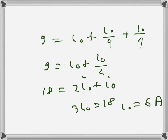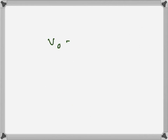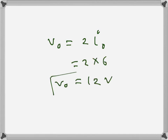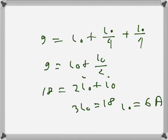Now that we know i_naught, we can find v_naught. v_naught equals 2 times i_naught, so that is 2 times 6, which equals 12 volts. So v_naught is 12 volts and i_naught is 6 amps.